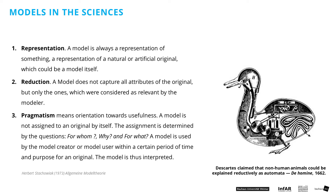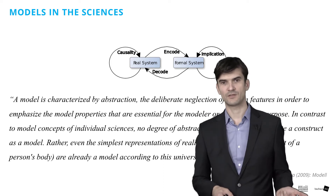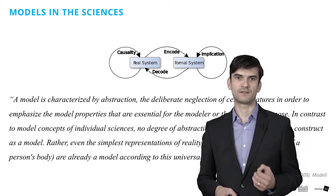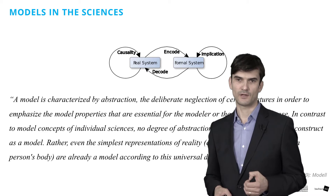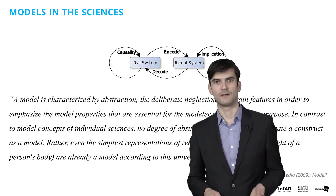I very much like this definition because it gives you an idea that we always use models in our daily life in order to understand our environment. The diagram at the top illustrates the modeling process: the encoding of a real system to a formal system, which we consider in the next chapter of this lecture. The implication of the formal model is what we can do with our model — for example, we can run a land use simulation, which we will see in the following modules. The decoding process is the interpretation of the results of a model or simulation, so what we do with the result after we run, for example, a land use simulation.